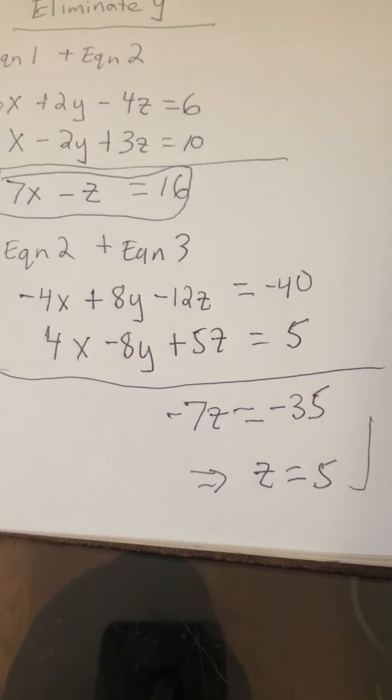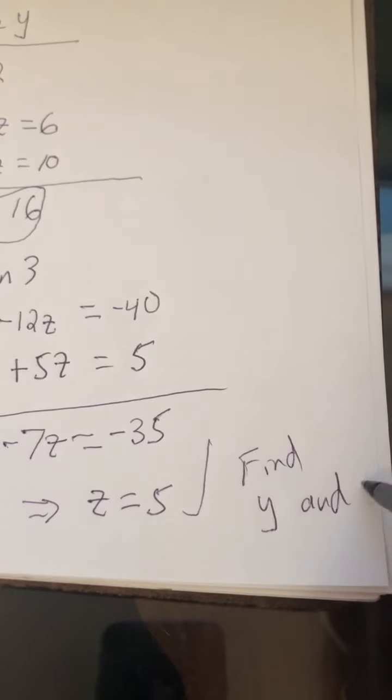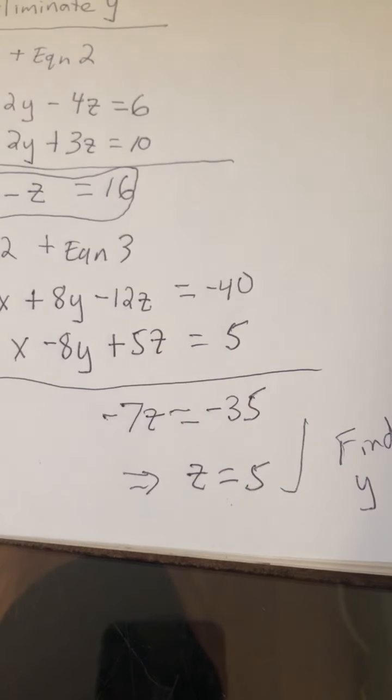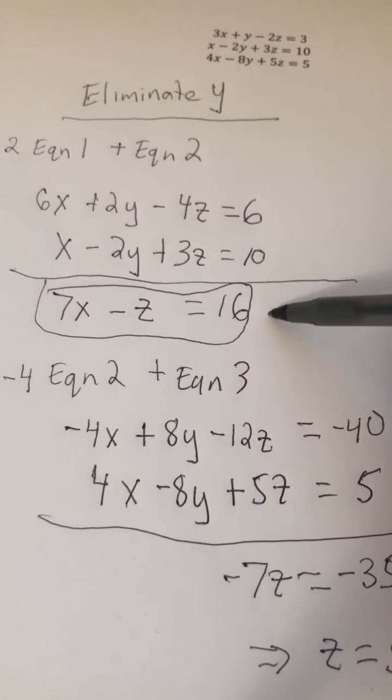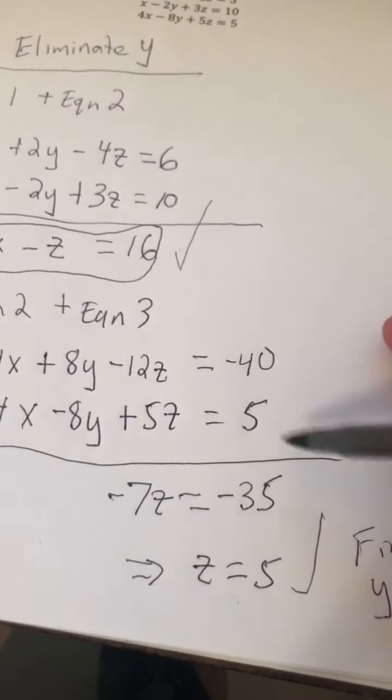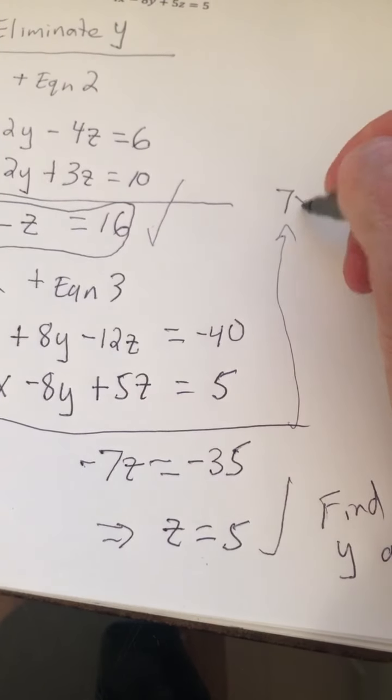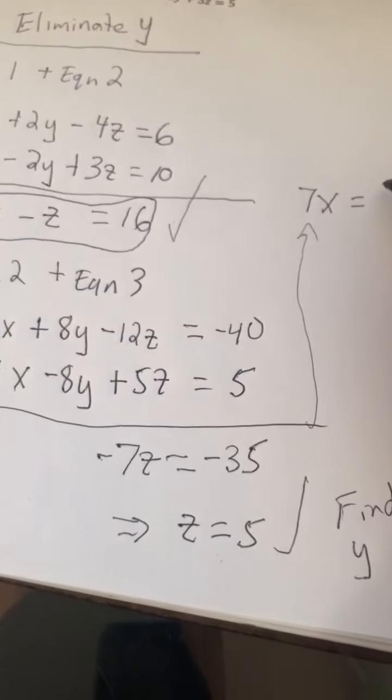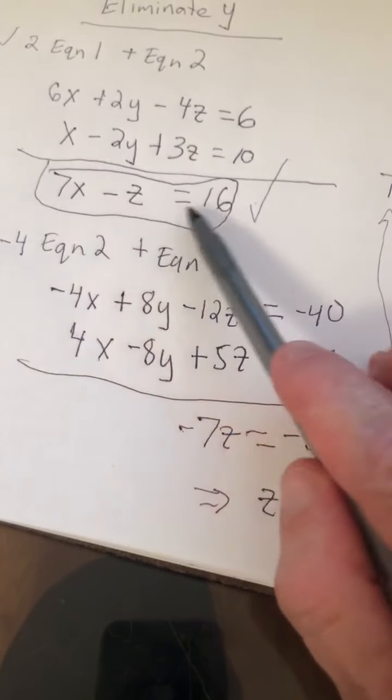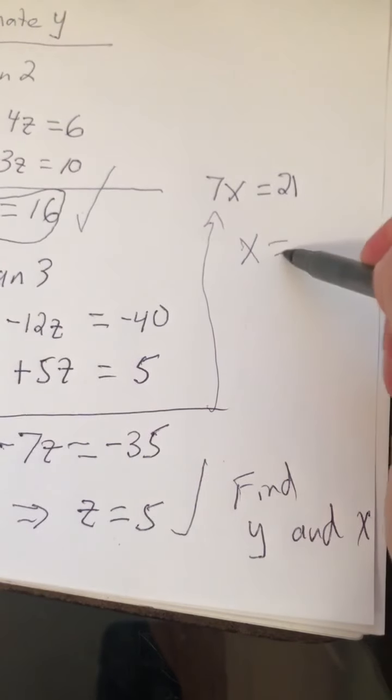And that's good, but we're not done yet. We need to now find y and x. We know now that z is equal to 5. But if we go back to this equation right here involving just x and z, if z is equal to 5, what does that give us? That gives us 7x equals 21. If z is equal to 5, this is 7x minus 5 is equal to 16. So 7x is equal to 16 plus 5, which is 21. So x is equal to 3.